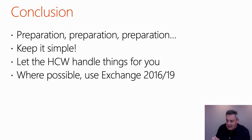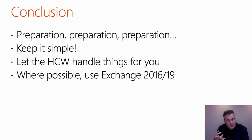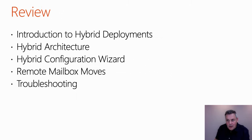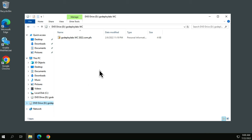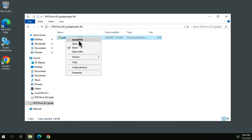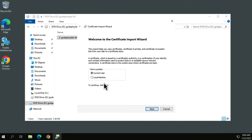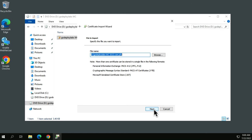Preparation is key: verify your domain name, deploy Azure AD Connect, and make sure you have a public digital certificate for your domain. Now let's look at the demo. Before deploying Exchange Hybrid we need to install a public digital certificate — I've got the PFX file here and I'm going to install it onto this machine. You need to be a local admin for this.